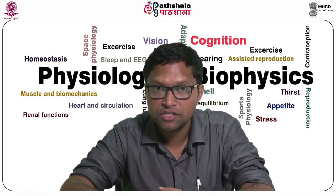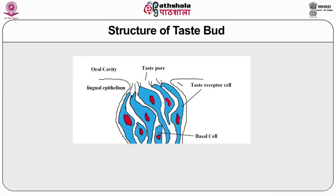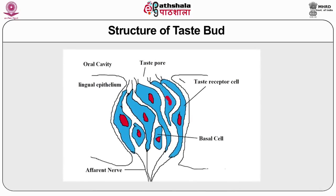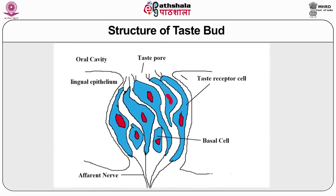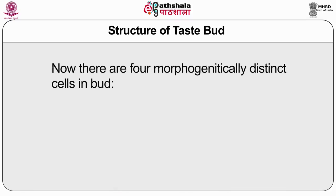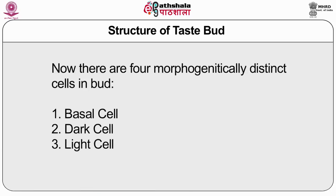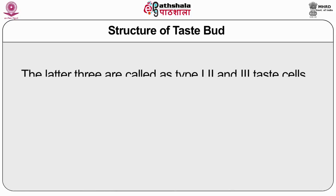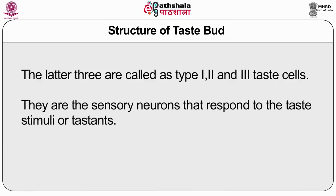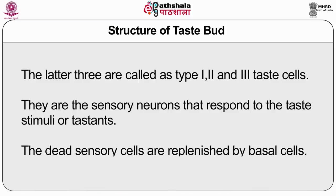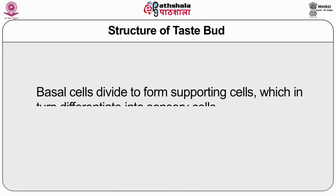The first point of contact of food is the tongue. The receptors for taste are located on the surface clustered into bud-shaped structures called taste buds. There are four morphologically distinct cells in the bud: basal cell, dark cell, light cell, and intermediate cell. Intermediate cells are of three types — type I, II, and III taste cells — and are sensory neurons that respond to taste stimuli. Dead sensory cells are replenished by basal cells, which divide to form supporting cells that differentiate into sensory cells.